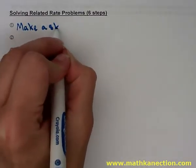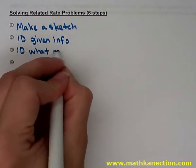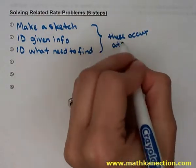When solving a related rate problem, there's just six steps to follow. First, just make a sketch. Second, ID the given information. And third, ID what you need to find. All three of those first three steps will occur at about the same time.